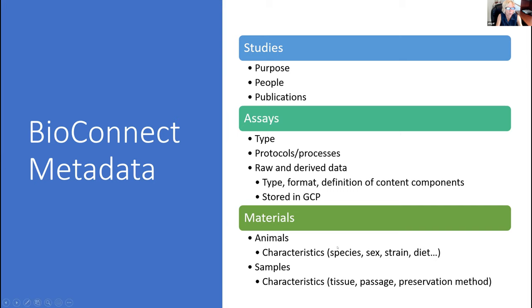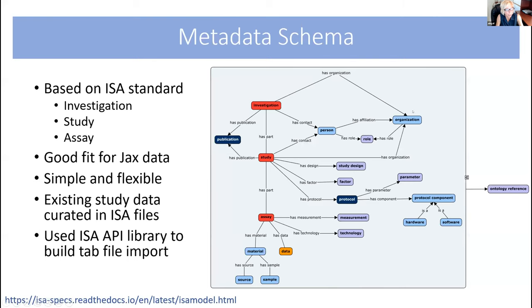We landed on the ISA standard for our metadata schema. We had originally gone through a couple of iterations — from something totally homegrown and hard-coded to something totally dynamic. At some point we realized we needed to adopt a community standard, and ISA — which stands for Investigation Study Assay — was a really good fit for us. The schema fits our studies, it's fairly simple for people to understand, and we can also extend it. Those characteristics I was discussing are accommodated within the ISA model. There are also a number of tools that we can use.